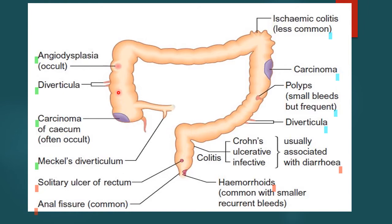This diagram shows the setup of the lower gastrointestinal tract. On the left, highlighted in green, are the four common causes from the small intestine and ascending colon: angiodysplasia in the right ascending colon, diverticula which is not so common, carcinoma of the cecum which often presents as occult blood, and Meckel's diverticulum from the terminal ileum, which is more common in children and young adults.